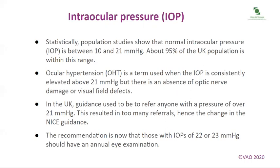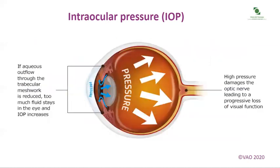The recommendation is now that those with IOPs of 22 or 23 mmHg should have an annual eye examination. If aqueous outflow through the trabecular meshwork is reduced, too much fluid stays in the eye and IOP increases. High pressure damages the optic nerve, leading to a progressive loss of visual function.